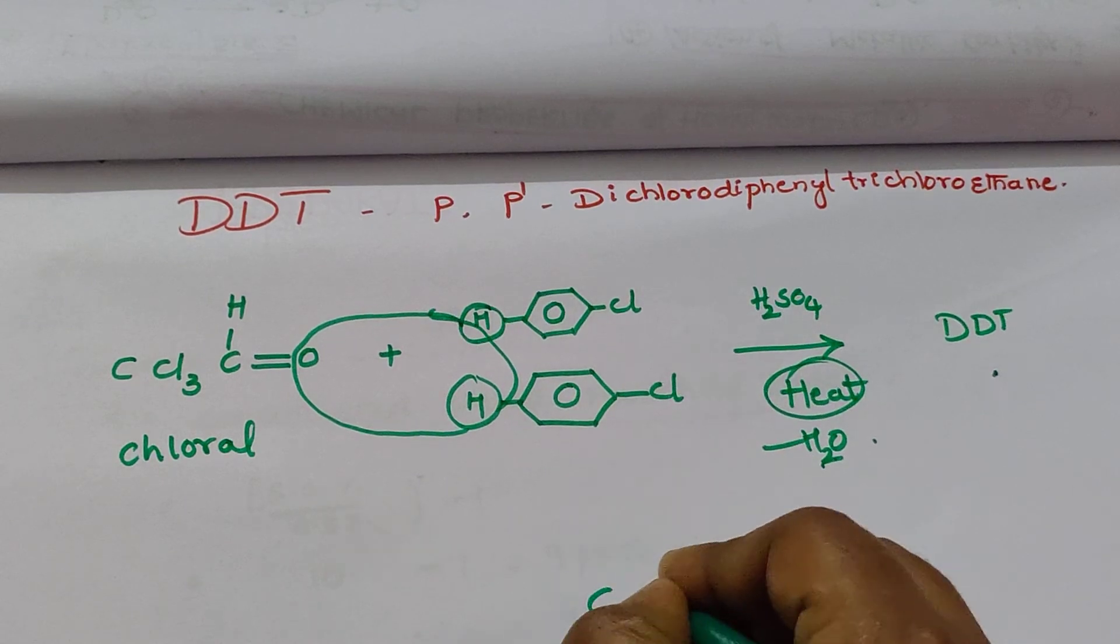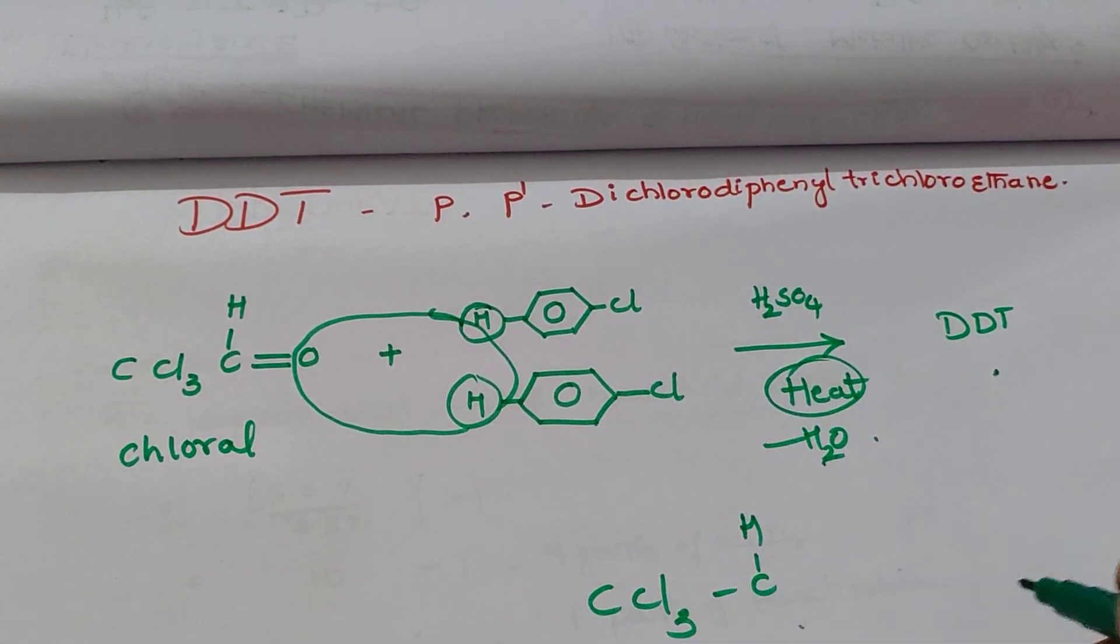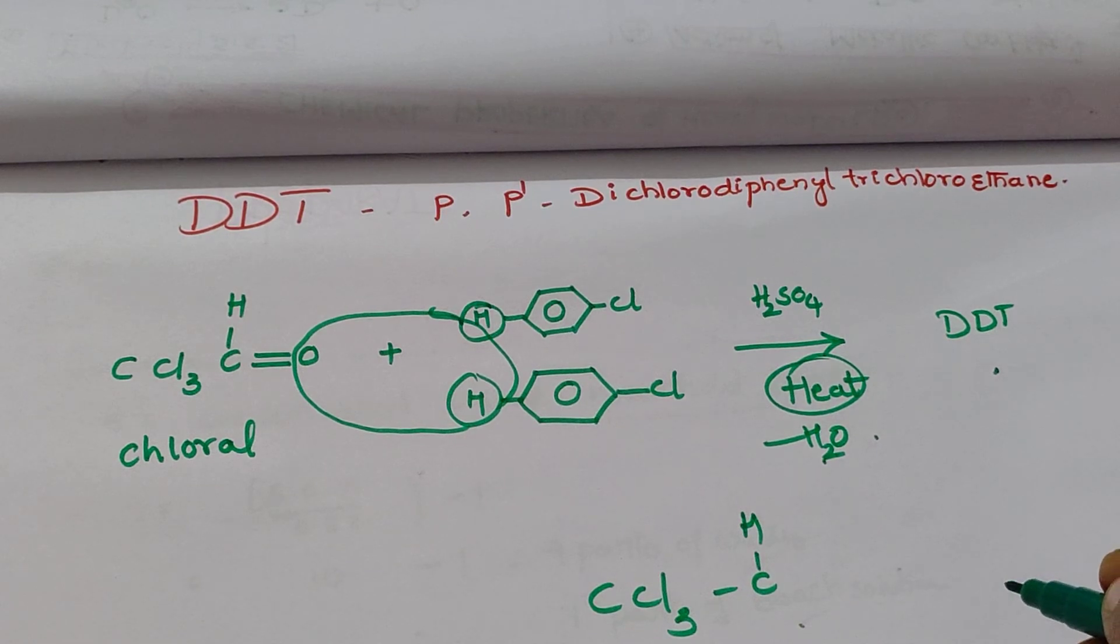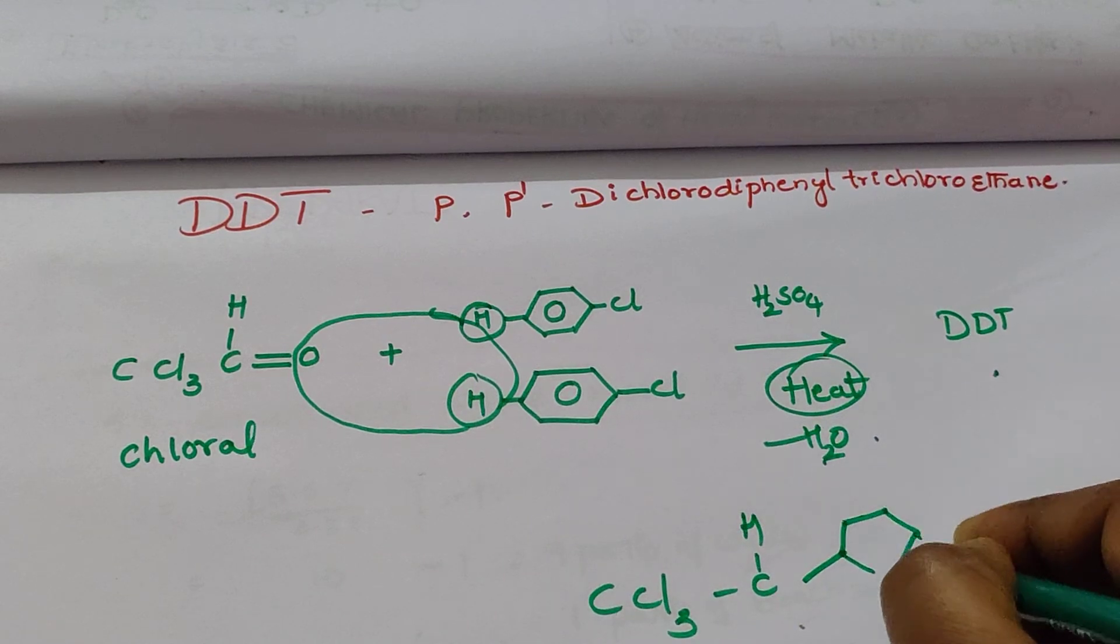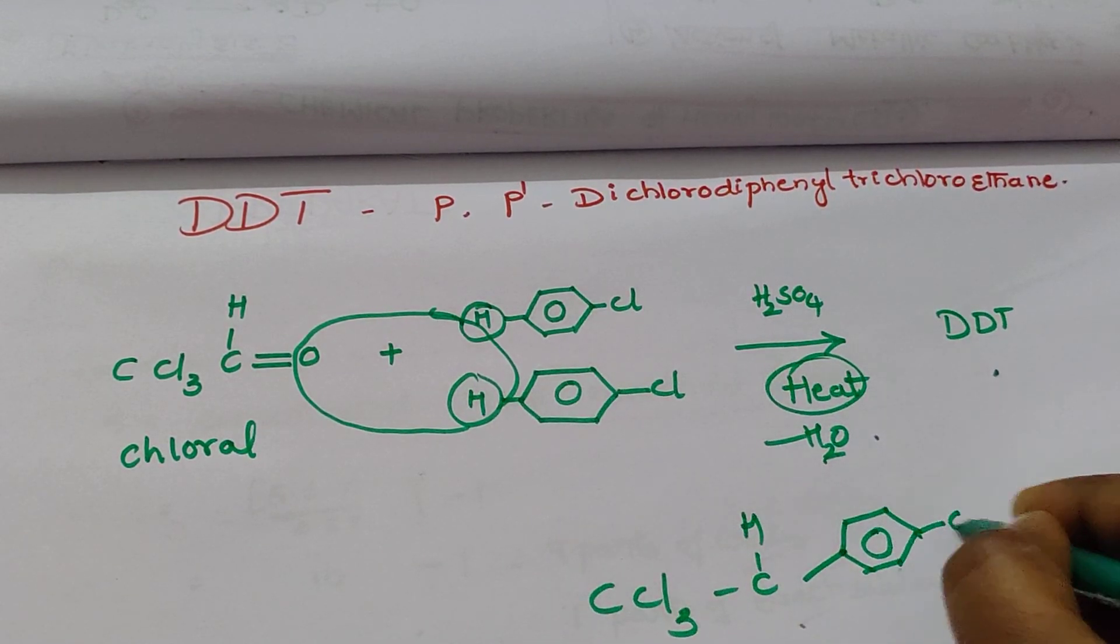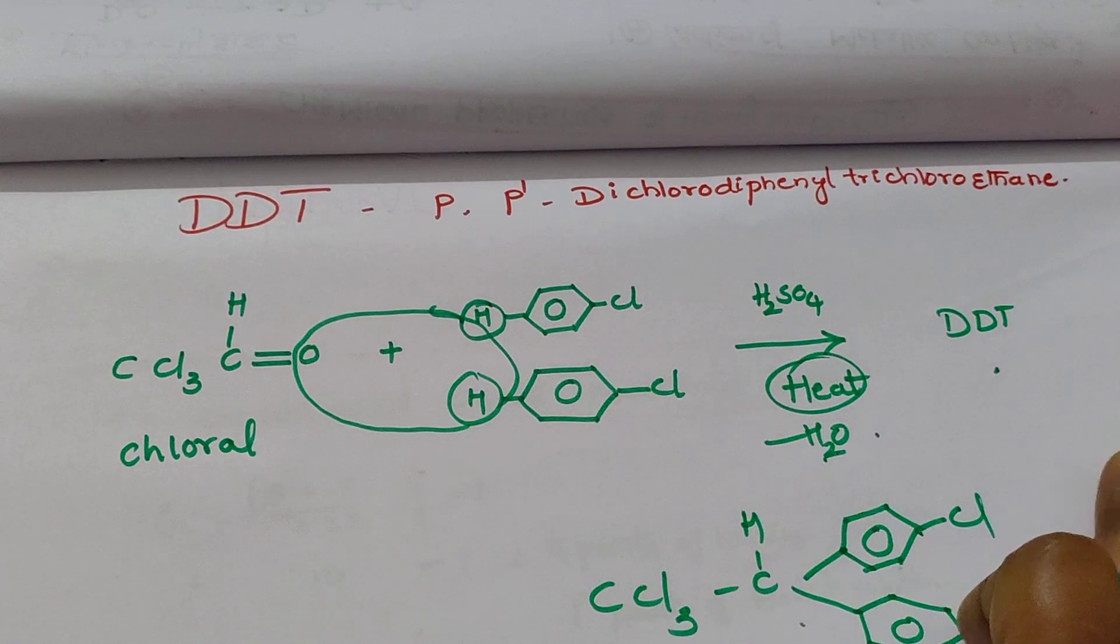The structure is CCl3, CH, and Cl groups with benzene rings containing Cl. This is the DDT structure.